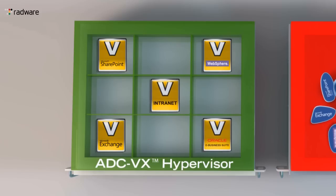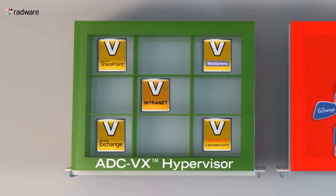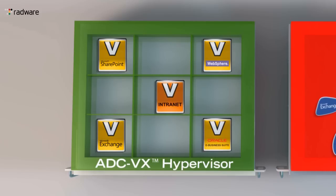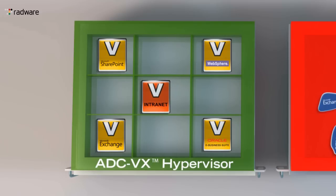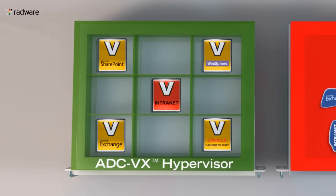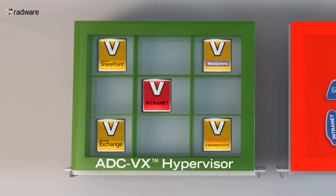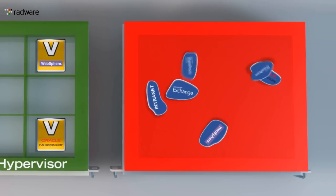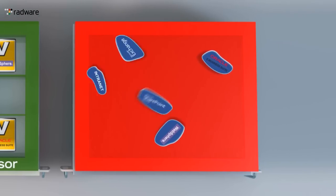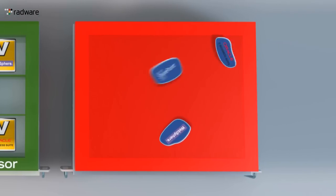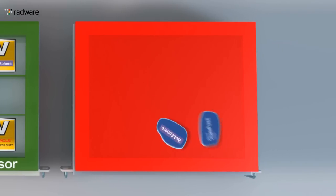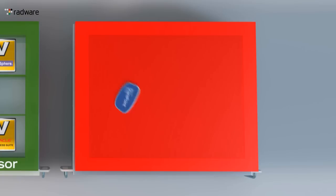A fault isolation mechanism guarantees that a problem in one VADC impacts only that single application. In the shared ADC, a failure related to one application impacts the entire device.